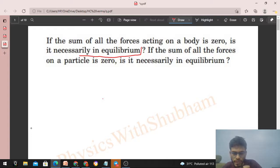If I have a body and net force on the body is zero, because sum of all the forces acting on a body is zero means net force on the body is zero. If net force on a body is zero, then we can say body will be in translational equilibrium.